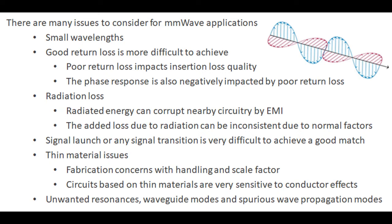Radiation loss is not much of an issue at lower frequencies, but at higher frequencies it becomes more and more of an issue. Radiated energy coming off the circuit itself can corrupt other nearby circuitry with EMI — electromagnetic interference. So radiation loss can be two different problems: losing energy that's being radiated off, and possibly corrupting other systems nearby. Also at millimeter waves, signal launch or any kind of signal transition is very difficult to achieve a good match, having to do with the very small waves propagating in these circuits. Signal launch is the transition from the connector to the circuit, and getting a good match with these transitions is much more difficult at high frequencies with short wavelengths.